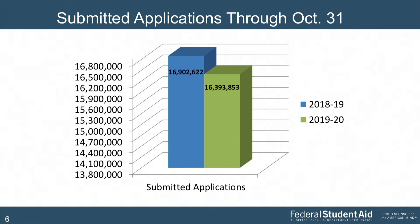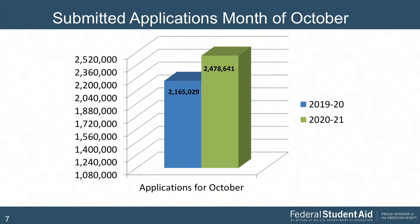Looking at applications received, comparing the 2018-2019 cycle to 2019-20, we saw a slight decrease of about 500,000 applications. However, comparing 19-20 numbers to 2020-21, we're seeing an increase — picking up by about 300 applications just for the month of October.